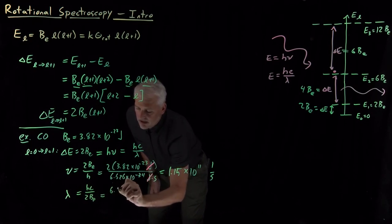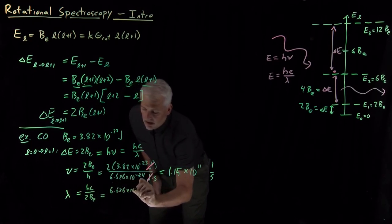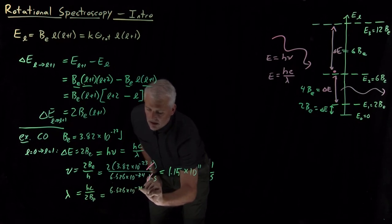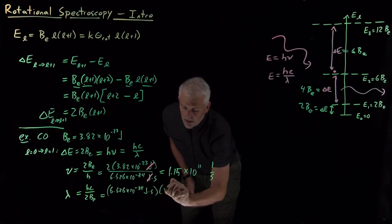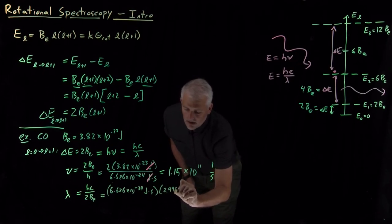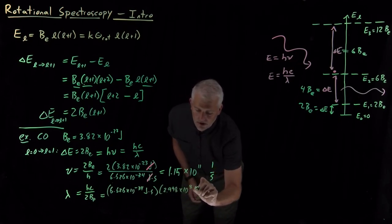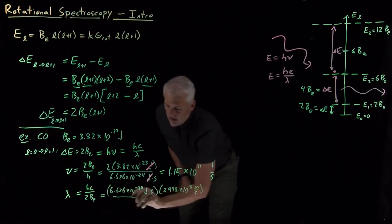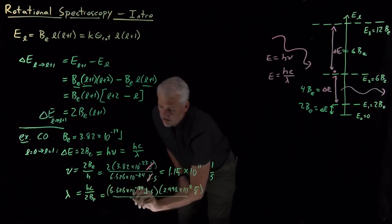So again, Planck's constant multiplied by the speed of light, 3 times 10 to the 8 meters per second, and divide all that by twice the rotational constant.